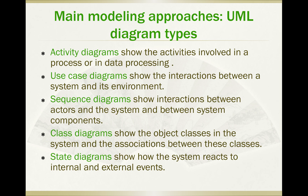Looking at UML diagram types, we have: activity diagrams, use case diagrams, sequence diagrams, class diagrams, and state diagrams. Activity diagrams show the activities involved in a process or data processing. Use case diagrams show the interactions between a system and its environment. Sequence diagrams show the interactions between actors and the system, and between system components.